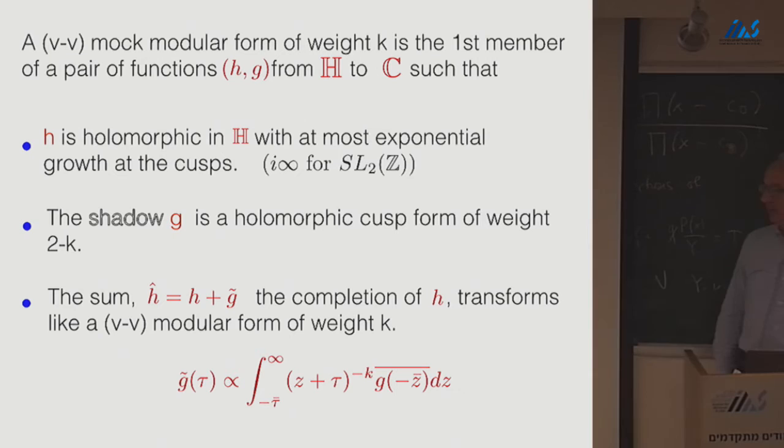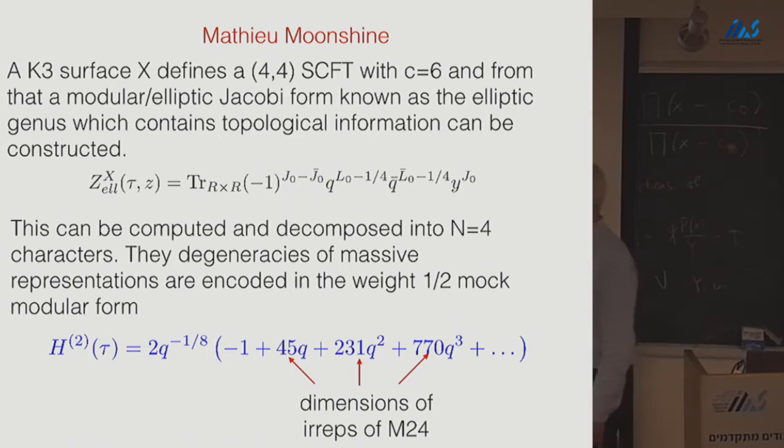And it's unique basically because it's a Jacobi form of weight zero and index one, and there's only one of those. And they decomposed it into n equals four characters. The degeneracies of the massive representations, when you do that, are encoded by a weight-a-half object known as a Mach modular form. And as they pointed out, 45, 231, 770 are all dimensions of irreducible representations of another sporadic group, the Matthew group M24. Of course, as you go up, they're not going to be just dimensions of your reps. There are going to be sums of dimensions, but it's still quite striking.